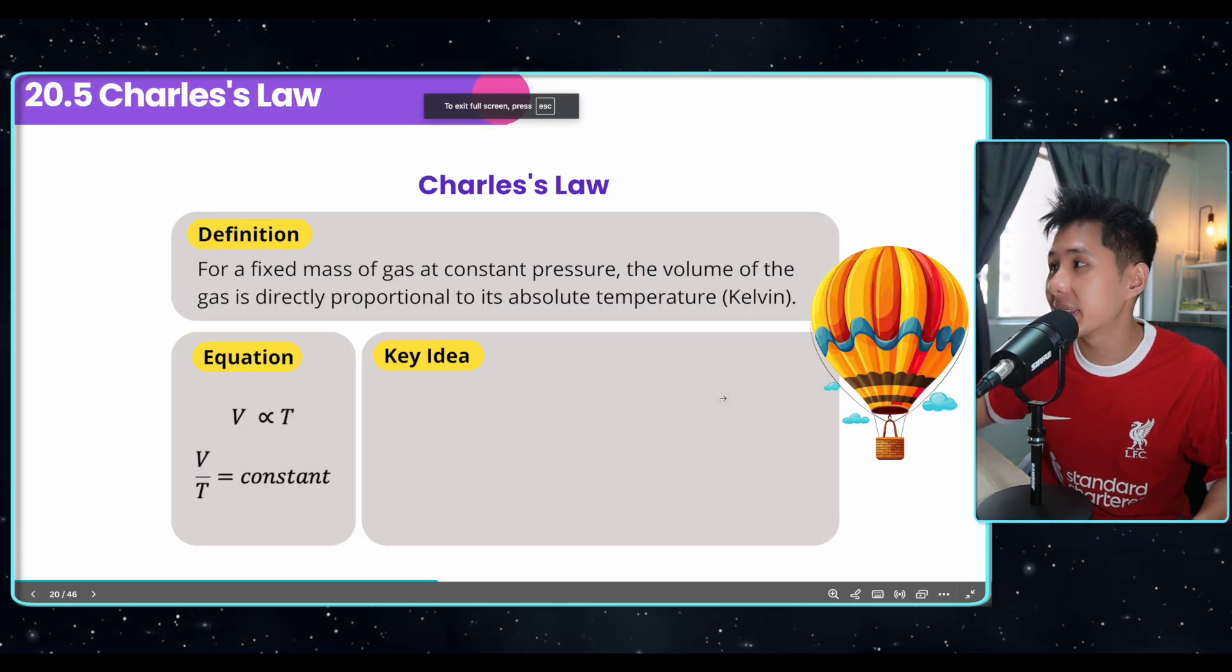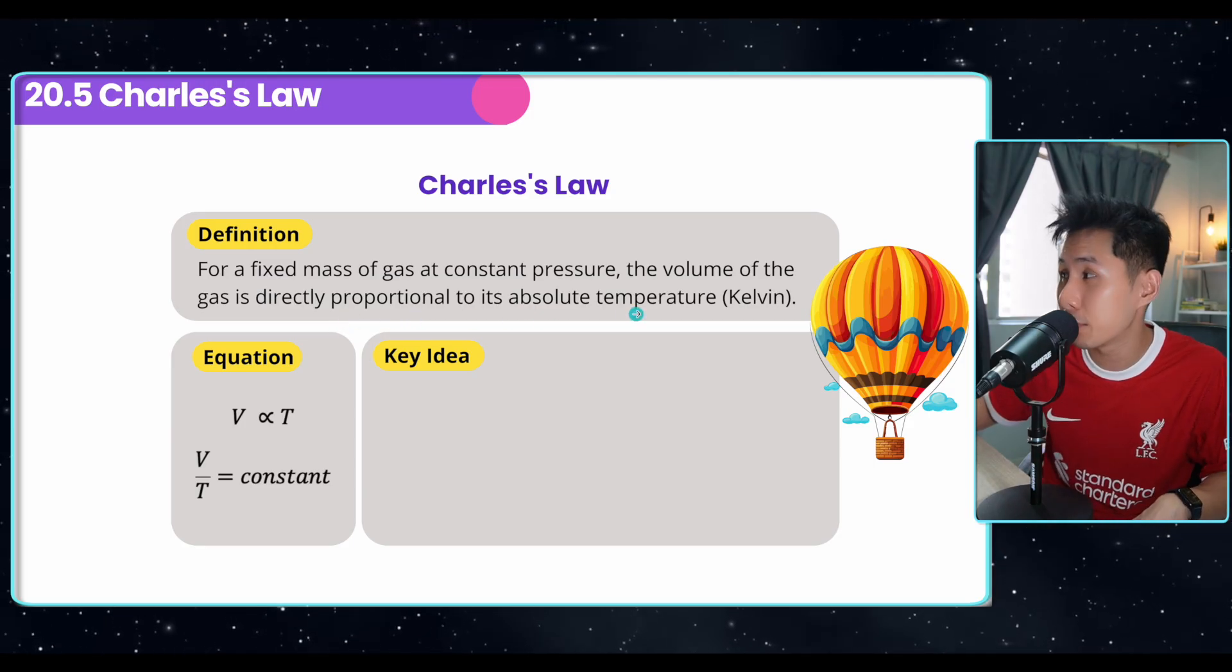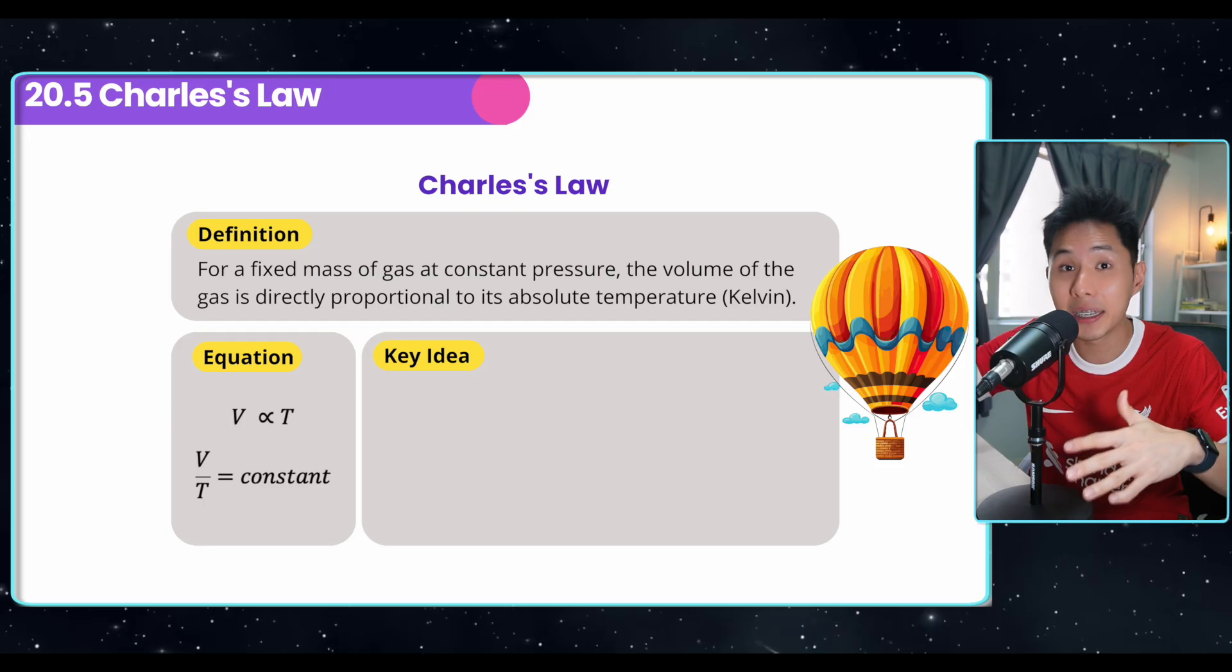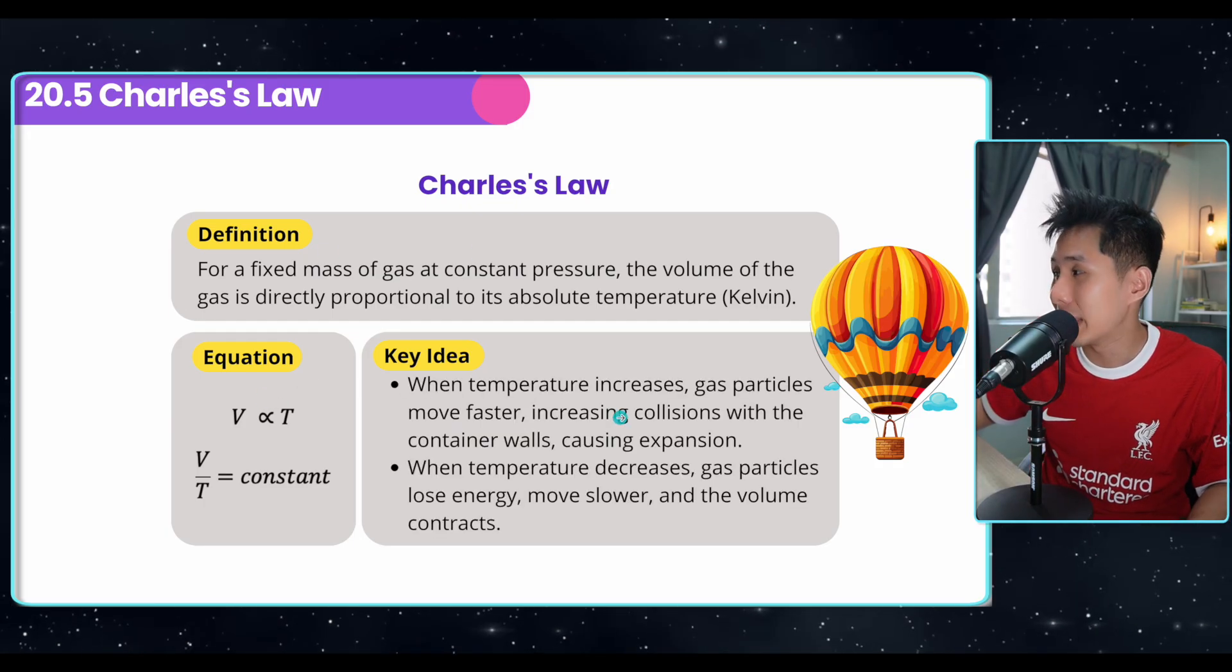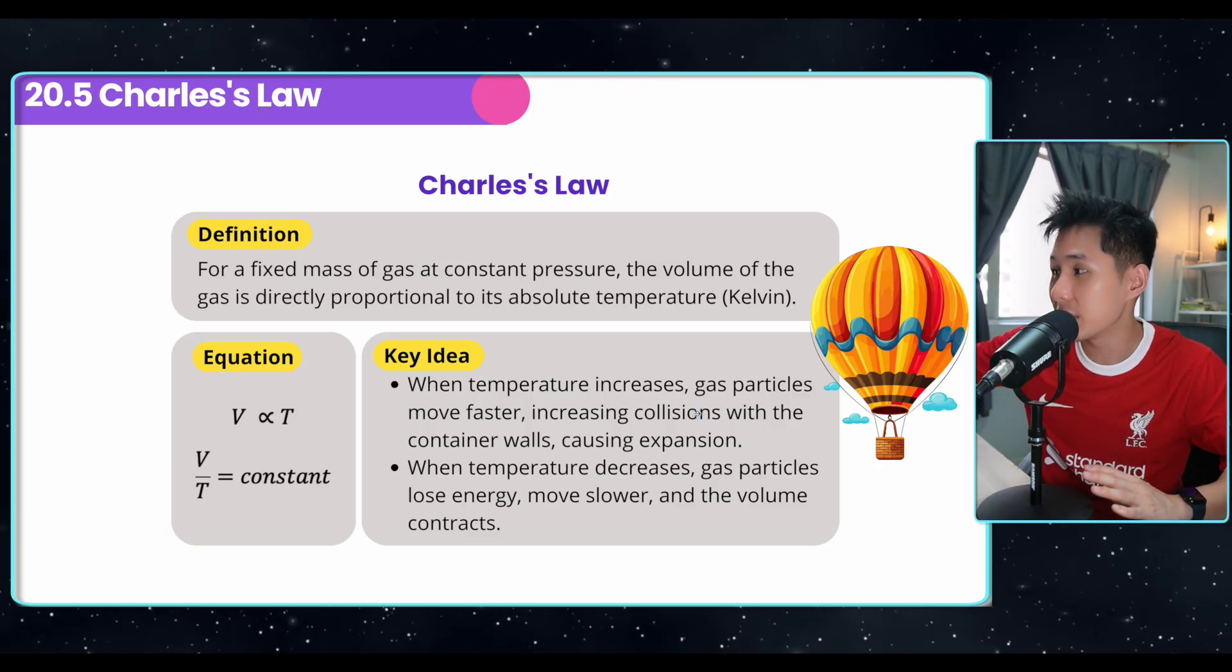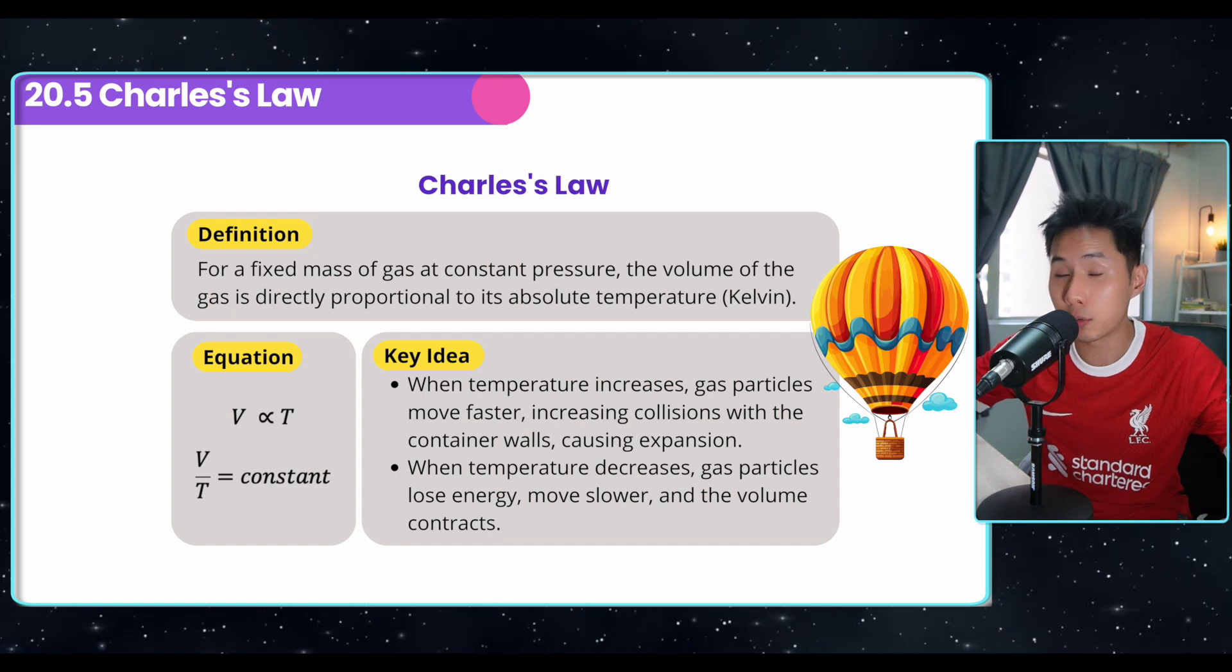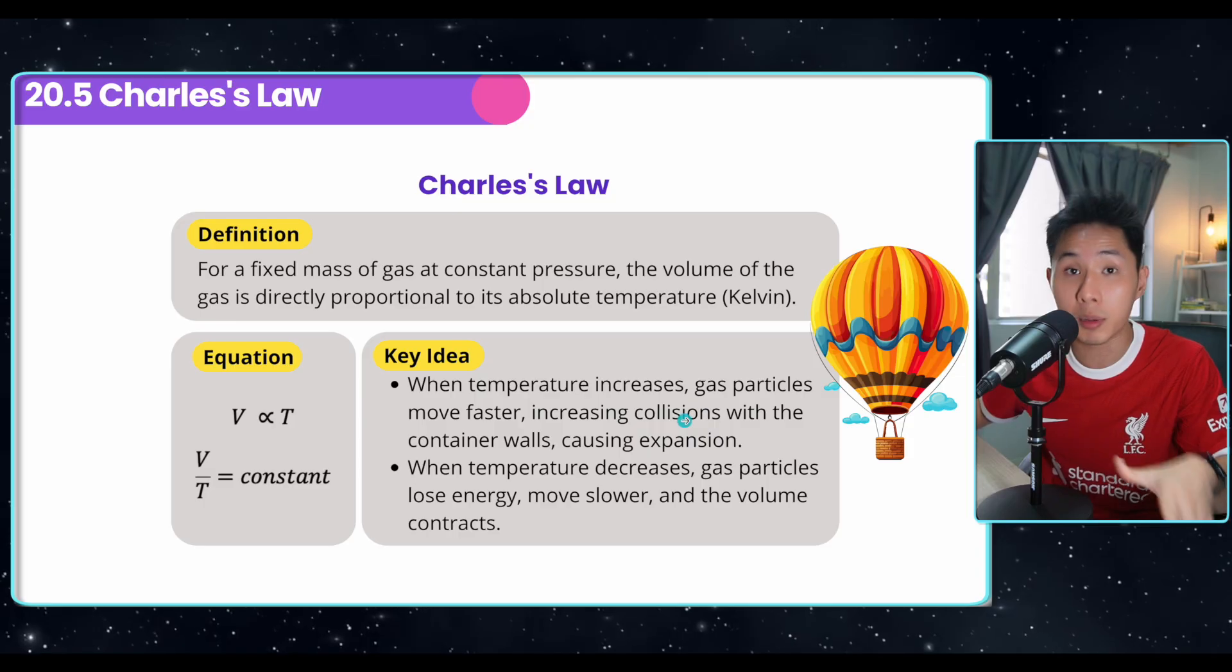The next law is the Charles Law. It states that the volume of the gas is directly proportional to its temperature, given that the gas is at constant pressure. The higher the temperature, the higher the volume. So as explained by this equation, when temperature increases, gas particles move quicker. Increasing collision with the container will cause it to expand. And when temperature goes down, collision happens less frequently. Therefore, the volume contracts.